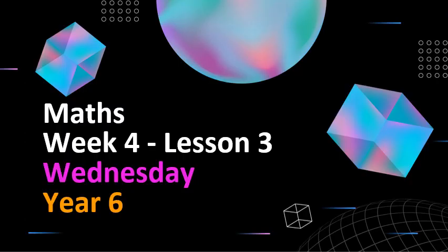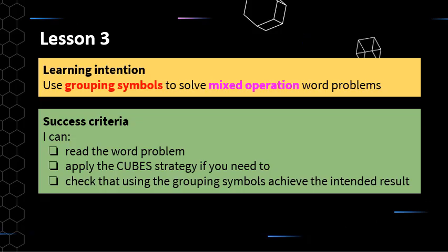Welcome to lesson three, week four for year six maths. Today we're looking at using grouping symbols to solve mixed operation word problems — that's a word problem where you'll need to use more than one operation, maybe addition and subtraction, or multiplication and addition. The success criteria: firstly, read the word problem and make sure you understand what's going on. If you're not sure, you could apply the CUBE strategy or draw a picture, but you really need to understand the word problem before translating it into a number sentence.